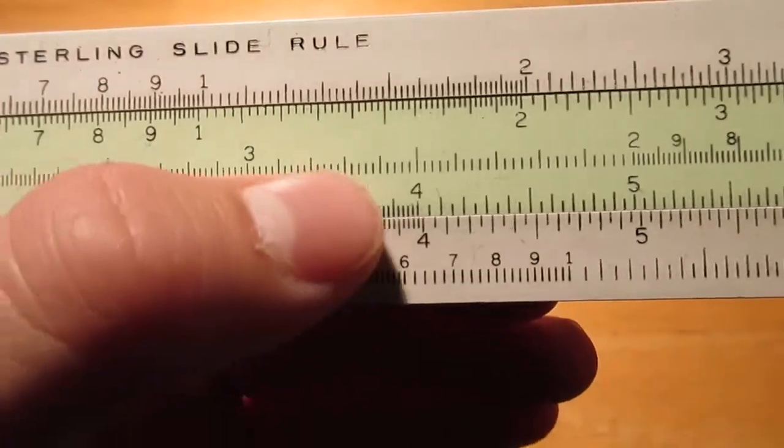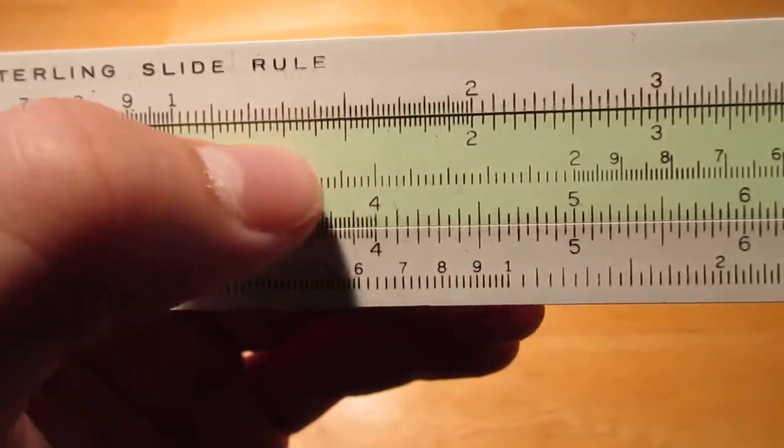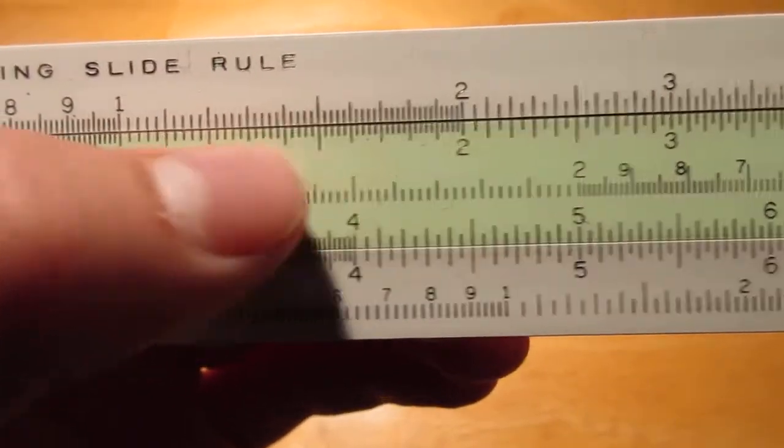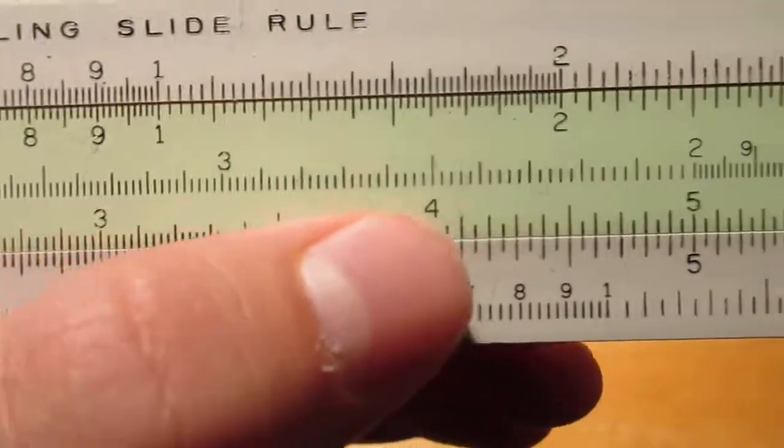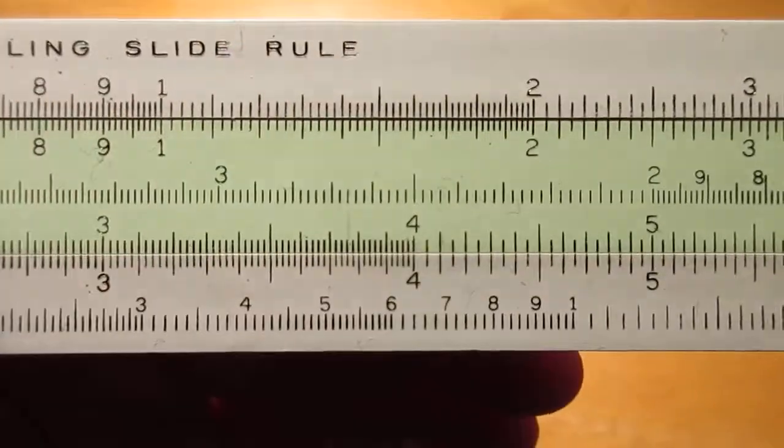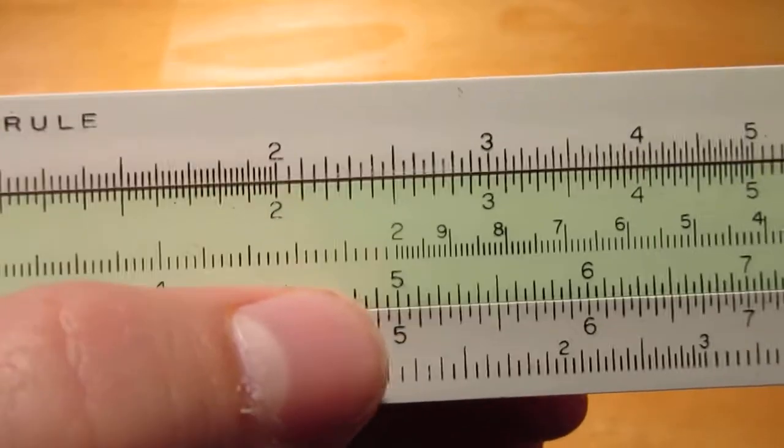4 squared is, it's hard to see, but it is directly below 12. Wait, sorry. 4 squared is directly below 16. Don't know what I'm talking about. 5 squared, right below the 25, and so on.